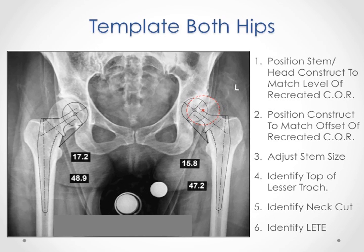Now there's a lot going on here because this is how we put it all together. Once the proper head, neck, and stem size option is selected and positioned on the virtual image, the top of the lesser trochanter is then identified. The distance between the top of the lesser trochanter and the medial aspect of our virtual construct is then measured.